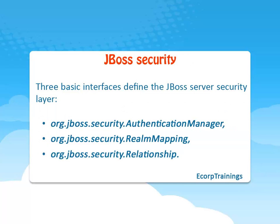In the JBoss architecture, security at the lowest level is defined as a set of interfaces for which alternate implementations may be provided. Three basic interfaces define the JBoss server security layer: authentication manager, realm mapping, and relationship to the EJB container architecture.